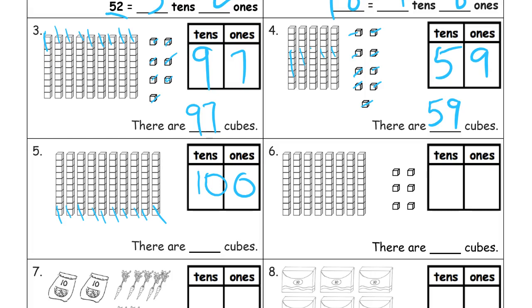If you want to count them by tens, it's ten, twenty, thirty, forty, fifty, sixty, seventy, eighty, ninety, a hundred. One hundred cubes.